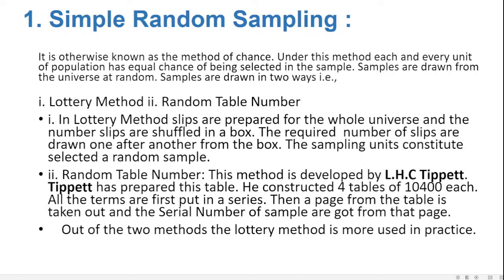The random number table is developed by L.H.C. Tippett, called the Tippett table. Tippett constructed four tables of 10,400 each. All terms are first put in a series, then a page from the table is taken and serial numbers of the sample are obtained from that page. Out of these two methods, the lottery method is more suitable and commonly used in practice.